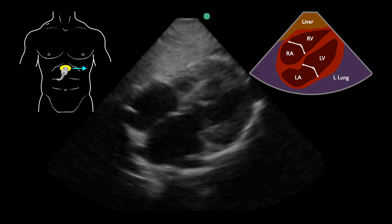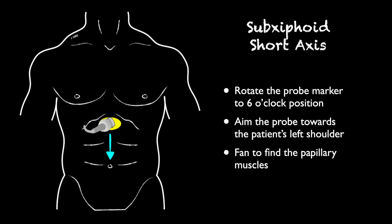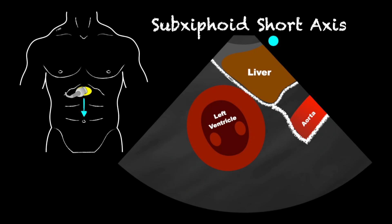From this view, we want to keep the heart in view to move to our subxiphoid short axis view. We're going to rotate our probe marker to the six o'clock position, or towards the umbilicus. When we do this rotation, make sure you continue to aim the probe towards the patient's left shoulder, then fan the probe until you can see the papillary muscles. The diaphragm is visible between the liver and the heart, and sometimes you'll see the aorta depending on the plane. This is a great view — think of a central dot in the middle of the left ventricle and appreciate how concentric the contractility is and how well it's functioning.